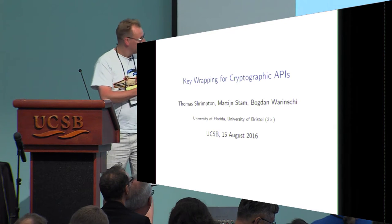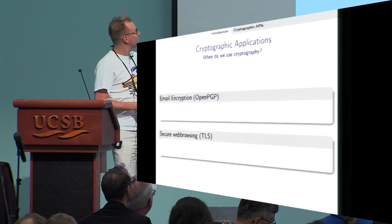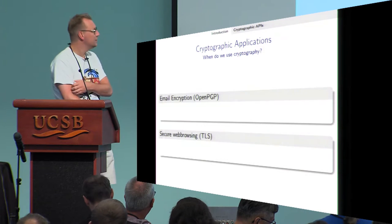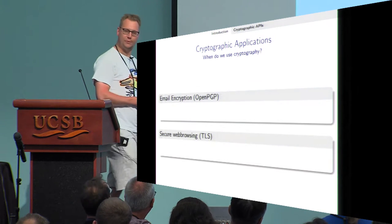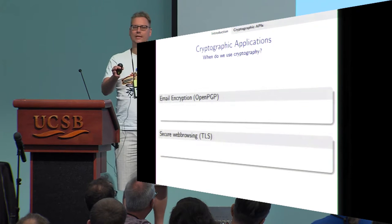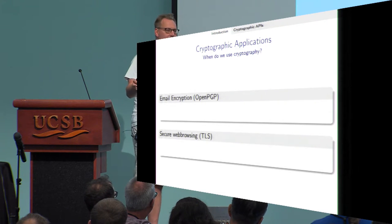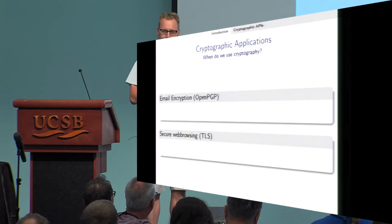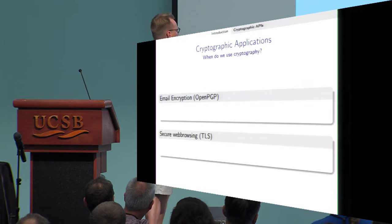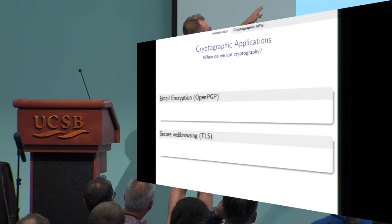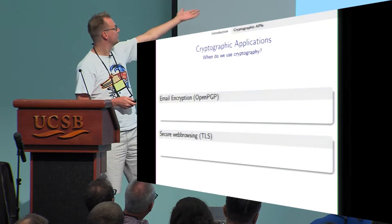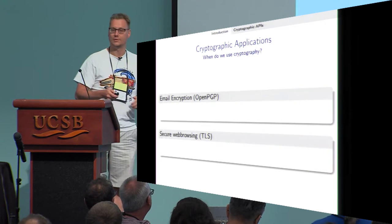Let's start with some very simple applications of cryptology: email encryption, which you've heard of, and secure web browsing, which Bjorn just talked about. Some examples are OpenPGP for email encryption and TLS for secure web browsing.